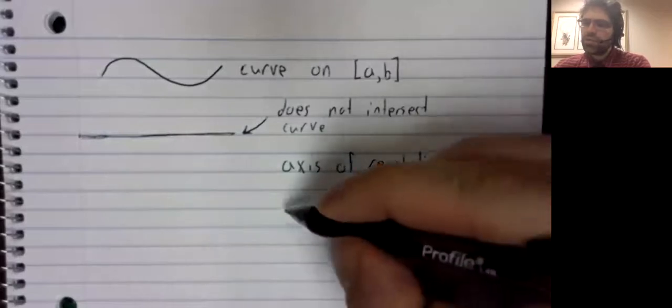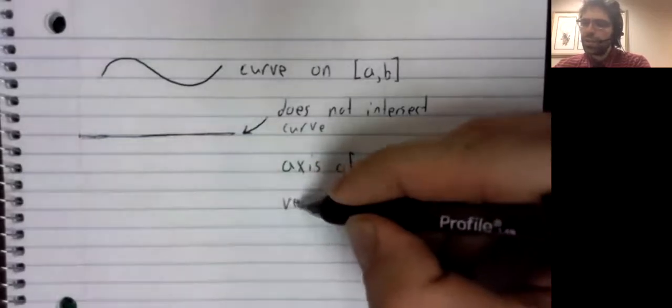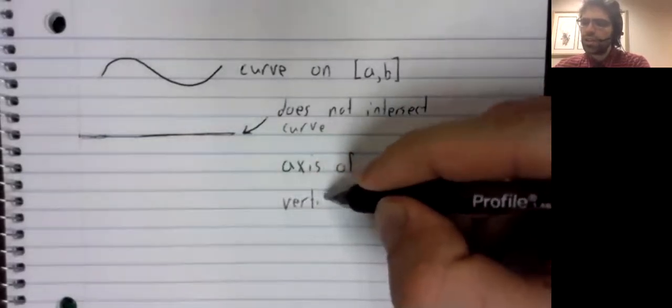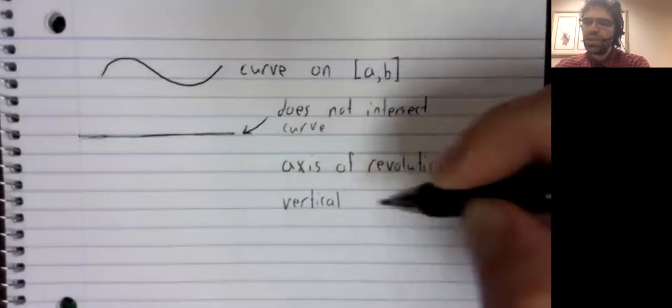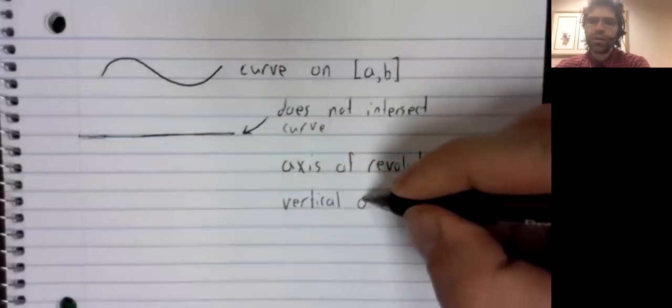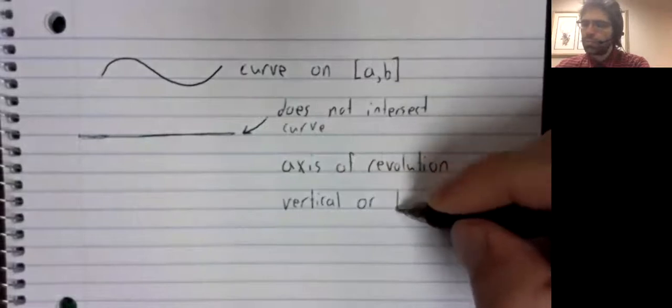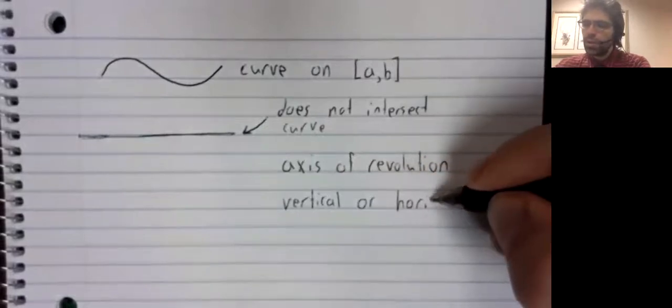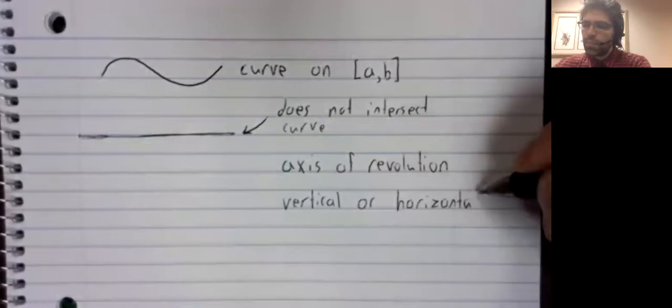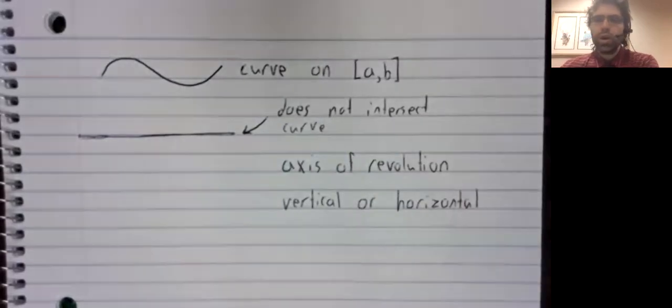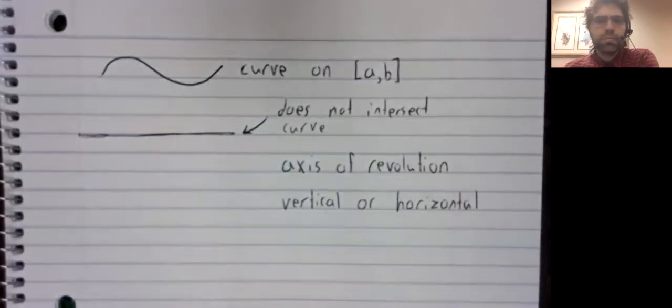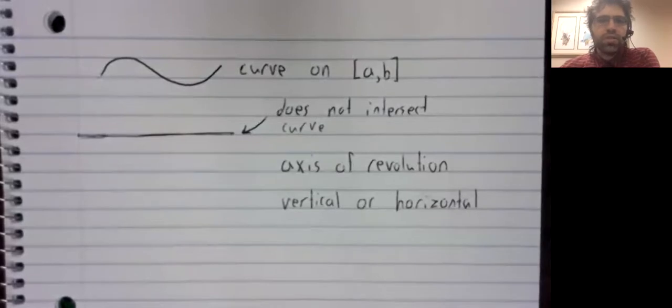And in this class, we'll assume that these axes are either vertical or horizontal. So, what's a solid of revolution?